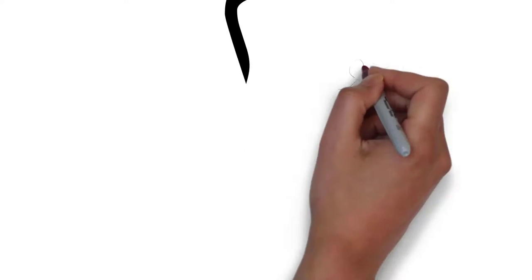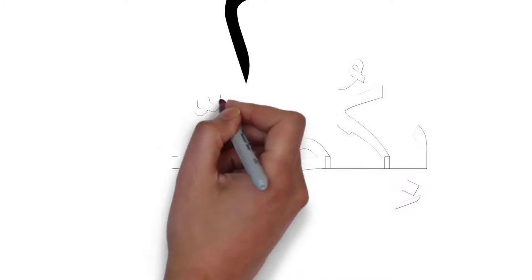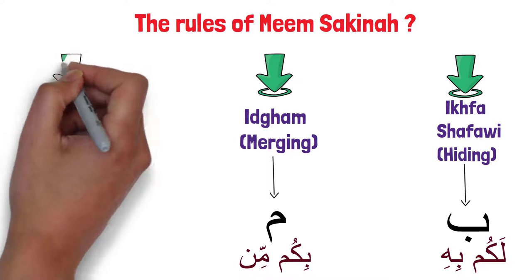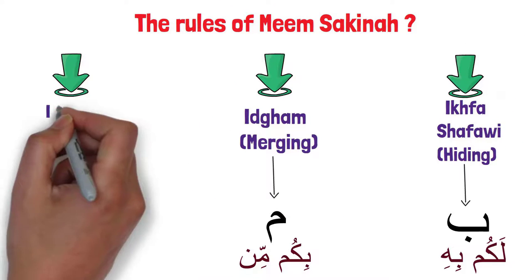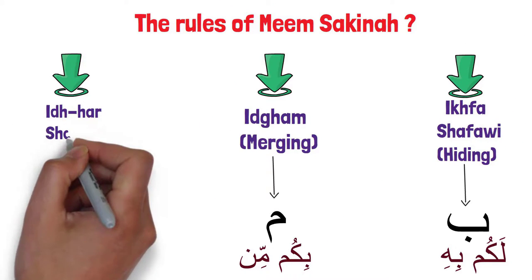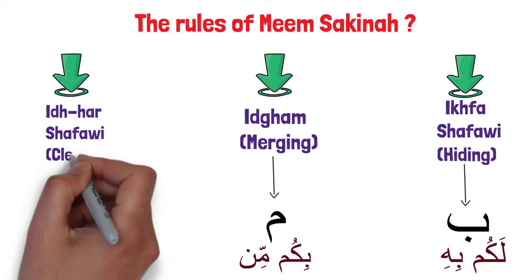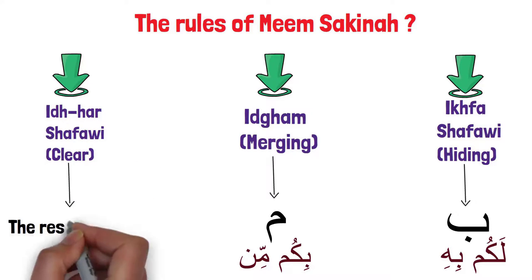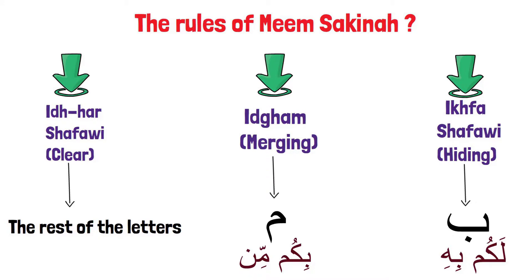And the third one is called إظهار, which happens with the rest of the letters. So let's summarize this rule: whenever you have با after Meem, you hide the Meem Sakinah; whenever you have Meem after Meem, you merge them together; otherwise you make the Meem clear, like فهم على.